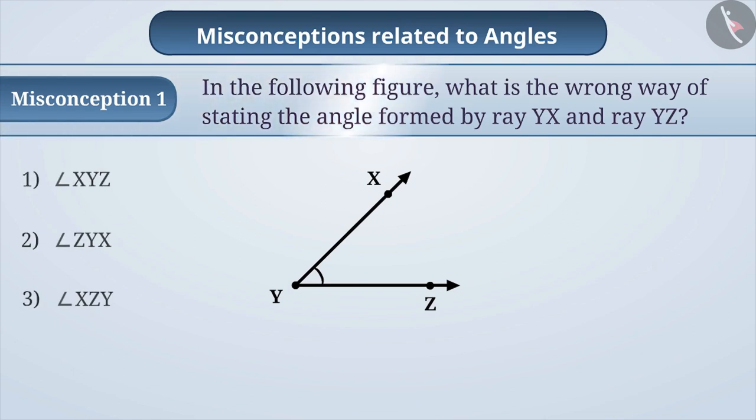Some children do not read the question properly. In a hurry, they assume that the question asked is what is the name of the angle in the given figure. So they give the answer as option 1. This is an incorrect answer.